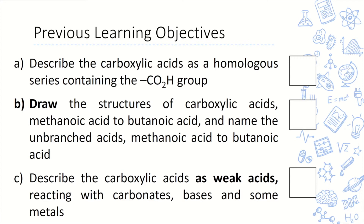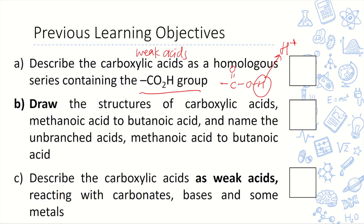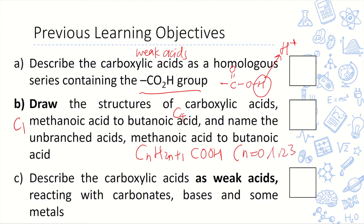In the previous lesson we learned about carboxylic acid as a homologous series containing the carboxyl group — a C double bond O and OH. This H is acidic, meaning it can dissolve in water and dissociate to form H⁺ ions. All carboxylic acids are weak acids. We looked at the full structural formula from methanoic acid to butanoic acid — methanoic has one carbon, butanoic has four. The general formula is CₙH₂ₙ₊₁COOH, where n starts from zero because the first carbon is already in the functional group.